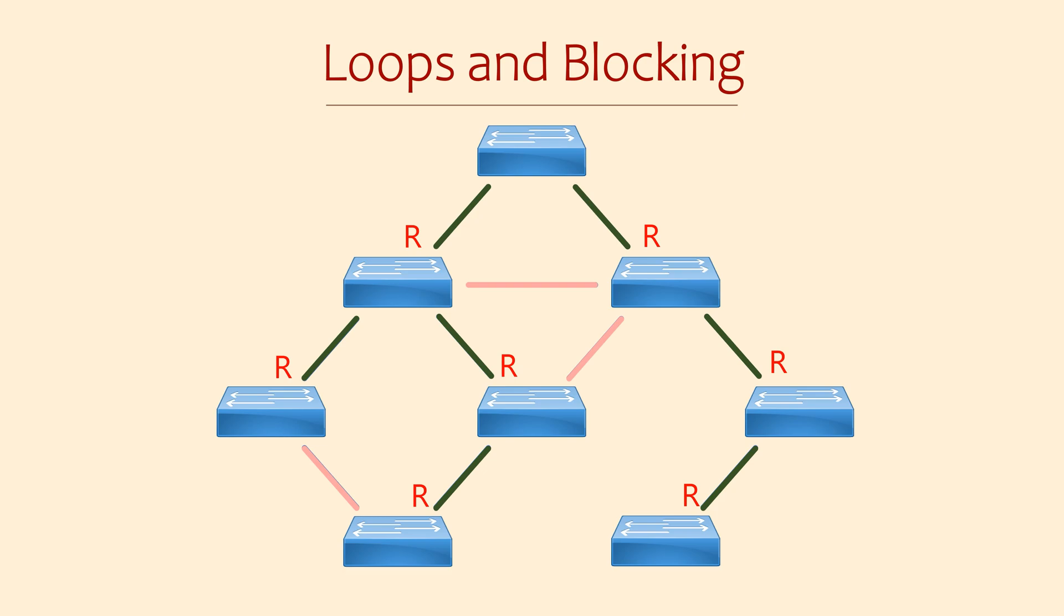Switches also forward on any BPDUs they receive, so other switches can learn a path to the root bridge. They send them out all interfaces except the root port. If a port isn't a root port and it isn't a blocking port, then it's called a designated port. This is a valid path to send traffic on, but it's not a path to the root bridge.